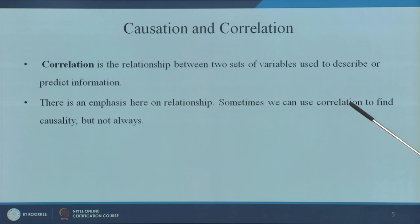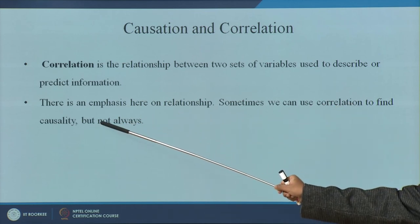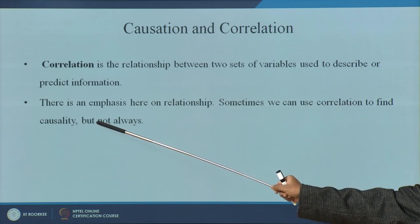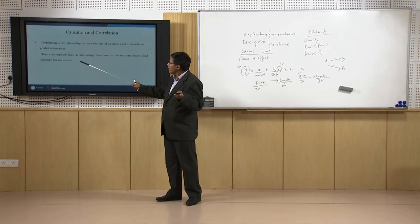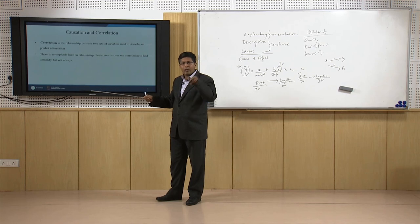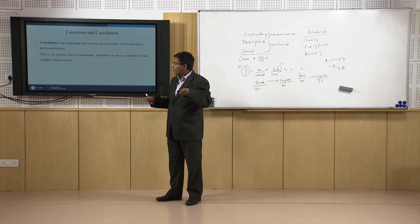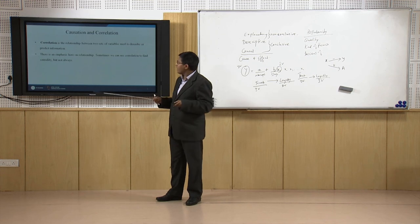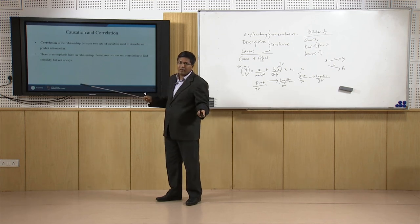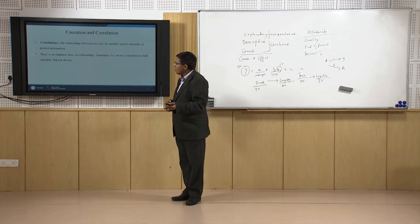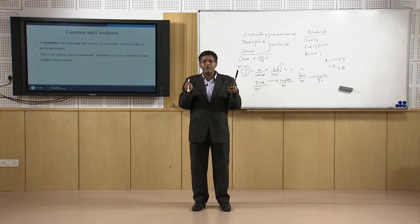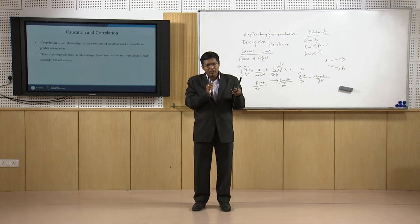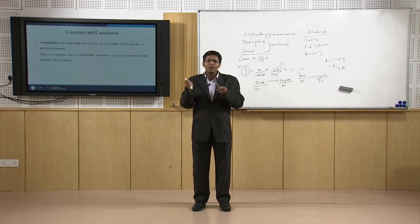Sometimes we can use correlation to find causality. If two variables A and B are related, that may behave as a cause. But causality might not necessarily be on the reverse or vice versa. One is to understand that cause and correlation are first of all two different things. A correlation might be a cause, but a cause might not necessarily have a correlation.